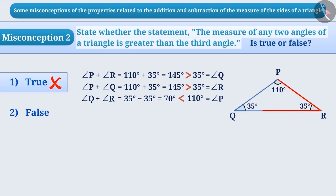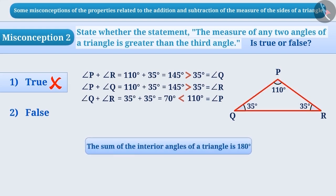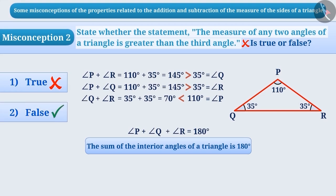But still, we have been able to draw a triangle. Note that the sum of interior angles of a triangle is 180 degrees. Therefore, we cannot say that the sum of any two angles of a triangle will always be greater than the third angle. Hence, the answer to the given question is option 2.